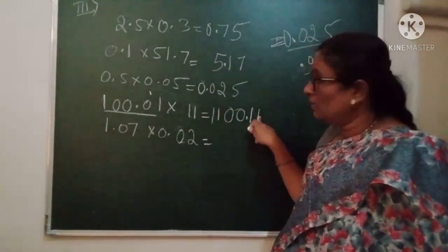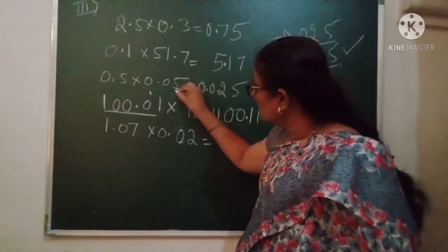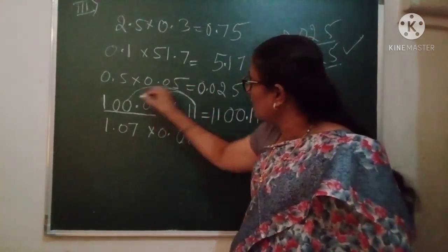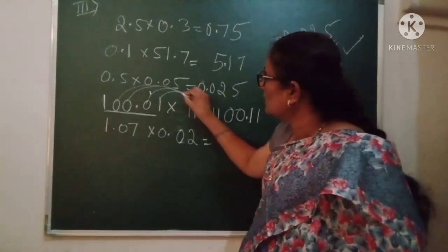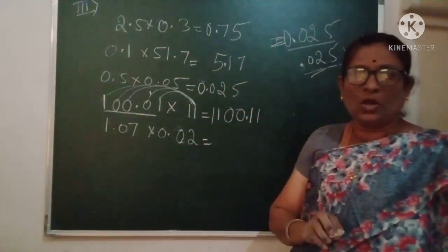What I did here? 11 × 1 is 11, 1 I have written, 1 carry I have here. This is 1, this way, this way, and this is it. By practice you can do this.